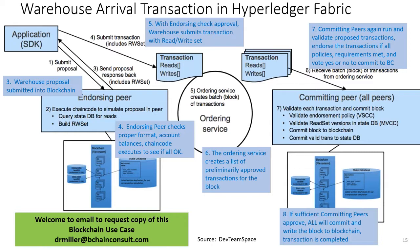All of that looks very complex, but it happens in less than a second. Private blockchains like Fabric can do thousands of transactions per second — it's as fast as credit card processing.